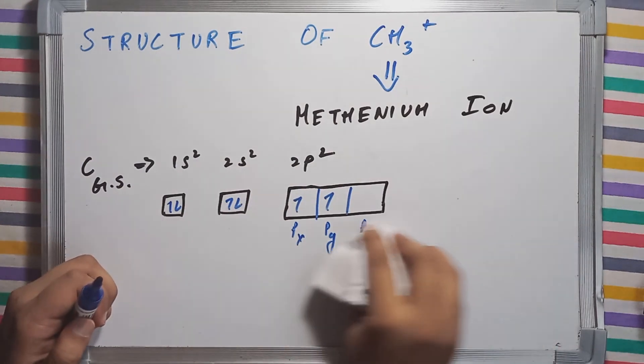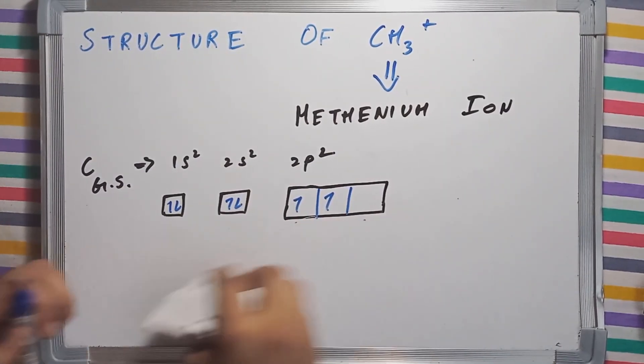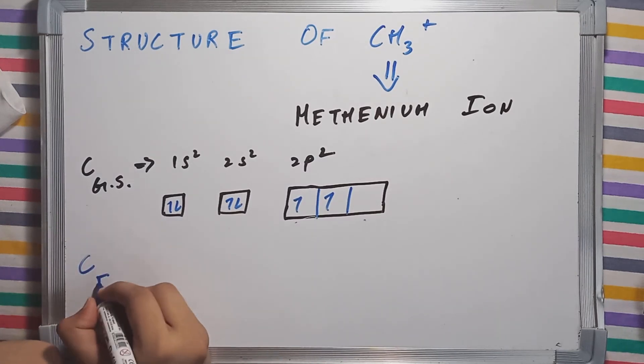Now carbon does not make bonds in the ground state. It makes bonds in the excited state.